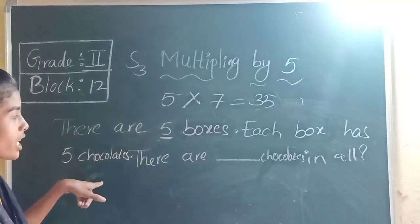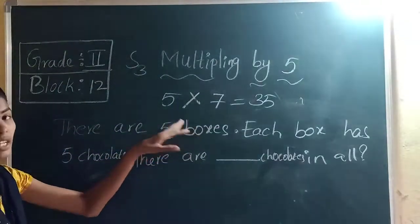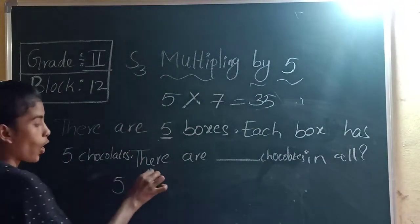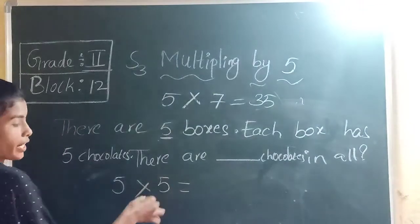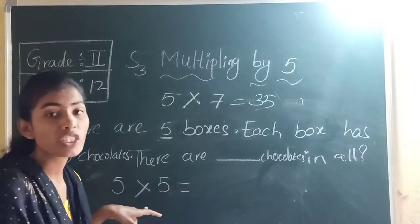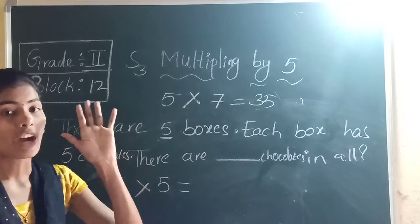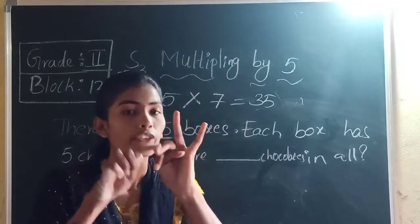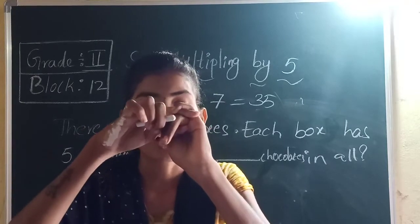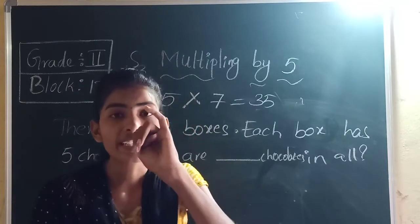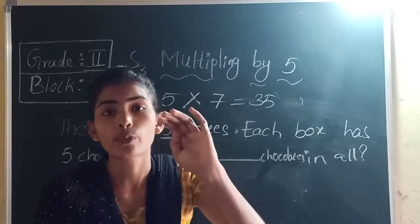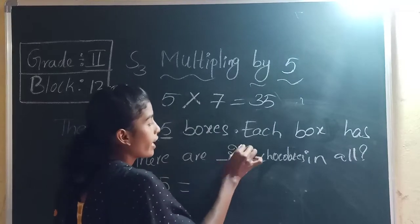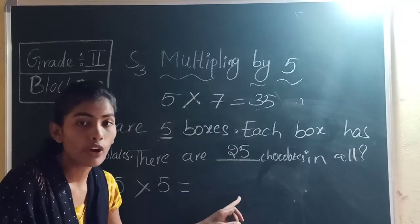The multiplication sentence is 5 into 5. Take 5 fingers and skip count of 5: 5, 10, 15, 20, 25. If you skip 5 five times, the answer is 25. So there are 25 chocolates in all.